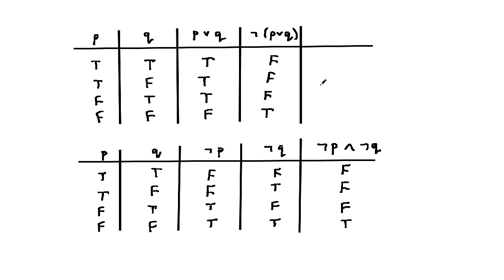Now comparing the columns for NOT(P or Q) and the column for NOT P and NOT Q, notice we get F, F, F, T — and here we also have F, F, F, T. So they are the same, and therefore these two are logically equivalent.